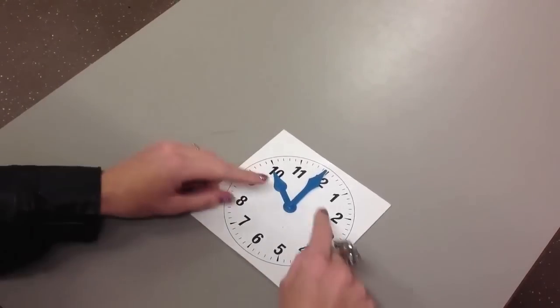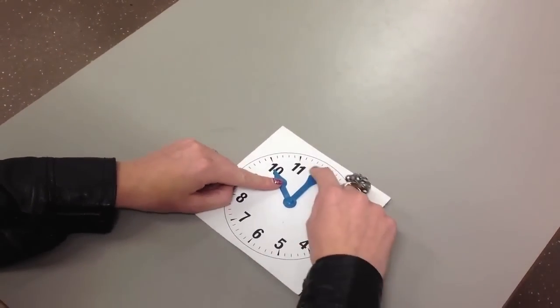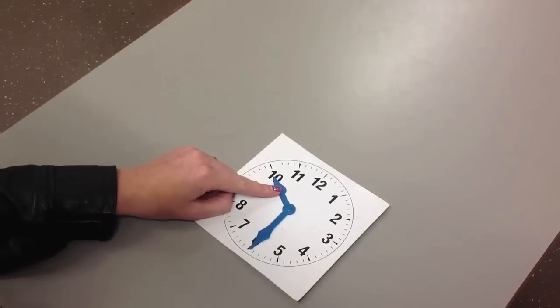So now we've got 10 o'clock. For it to become half past 10, the long hand points straight down to number 6.